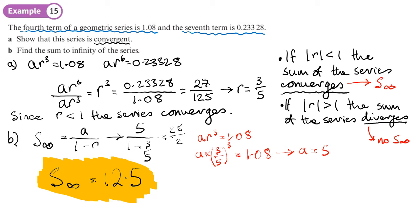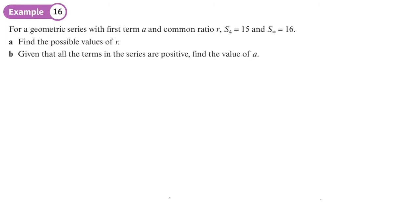Lots of things in maths are based on ideas like the sum to infinity. In differentiation, we look at what happens as a small gap tends towards zero. In integration, we look at what happens when the width of strips tends to zero and we have an infinite number of strips to find the area. So we often look at what happens when things tend to zero or tend to infinity.